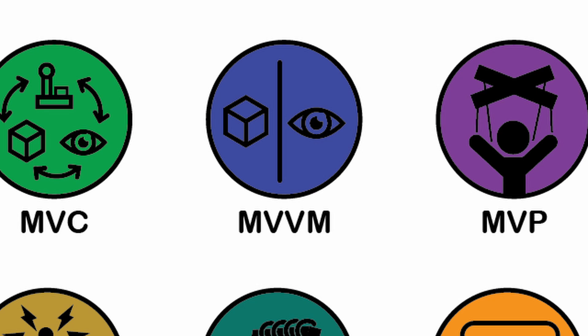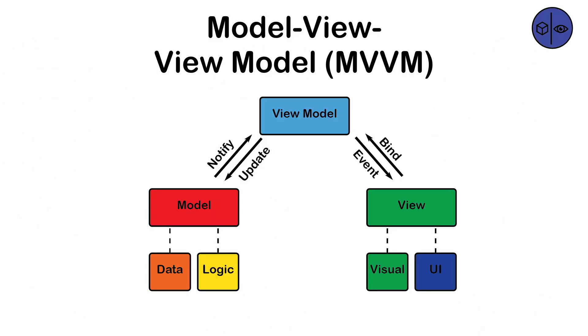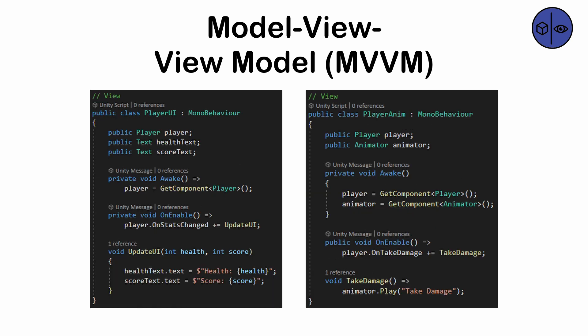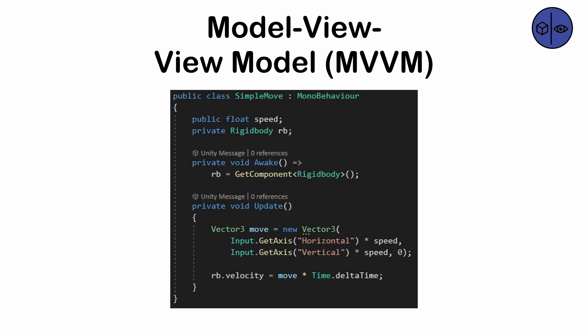The Model-View-ViewModel pattern. A variation of MVC in which an entity known as the ViewModel is responsible for mediating between the logic and the visuals. For instance, a player class might serve as the ViewModel, coordinating player stats, movement, and user inputs. The current state of the entity is then made public for other systems that need to know about it, such as an animator in charge of updating visuals. For smaller projects, this can feel over-engineered.